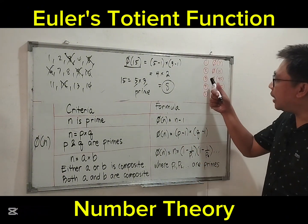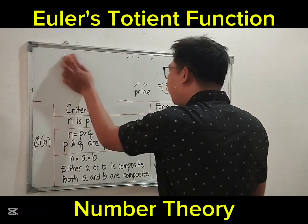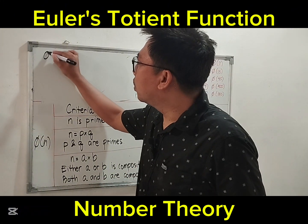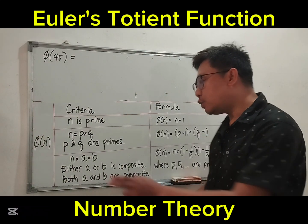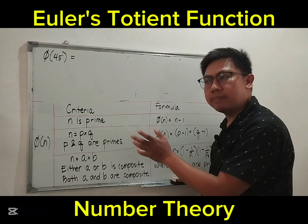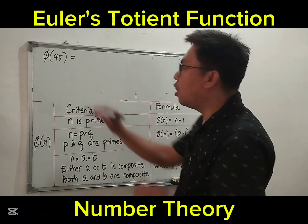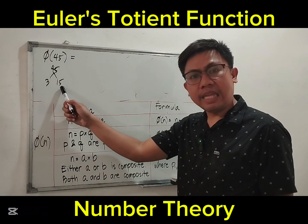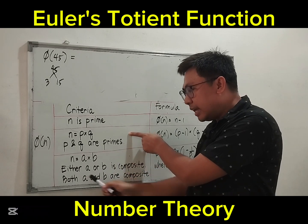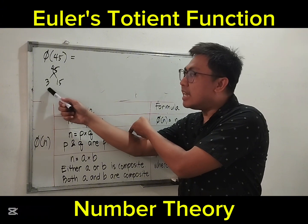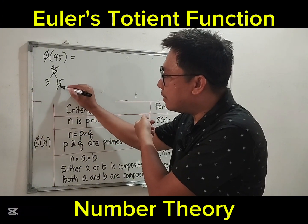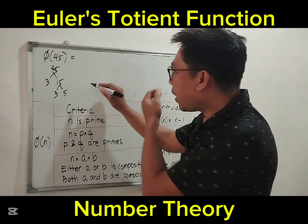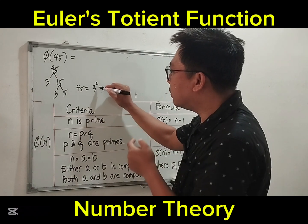Number 3: phi of 45. This is case 3. We factor 45: 45 equals 3 times 15. But 3 is prime and 15 is not prime — 15 is composite. So we continue factoring: 15 equals 3 times 5. Therefore 45 equals 3 squared times 5. The prime factors are 3 and 5.